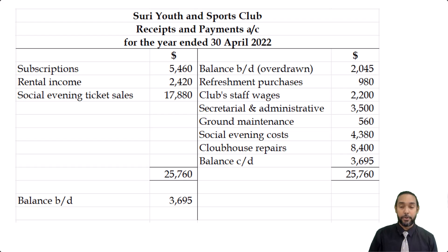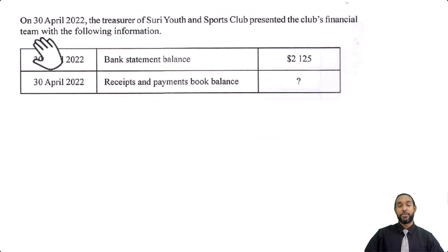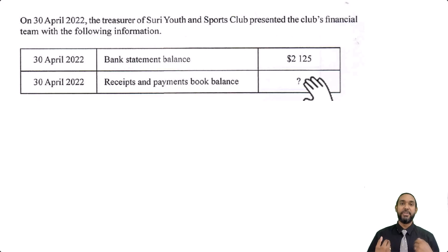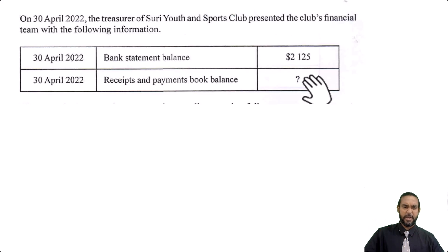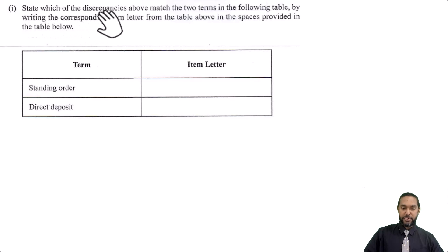If you want to check out the tutorial on how to do a receipts and payments account, I'm going to put a card up there and a link in the description below. Now let's take a look at Part B. So Part B reads: on 30th April 2022, the treasurer of Surrey Youth and Sports Club presented the club's financial team with the following information. The bank statement balance at the end of the year is 2,125. The receipts and payments book balance has a question mark — we had to find it just now, and it was 3,695. Discrepancies between the two records were discovered, and there are six items listed.